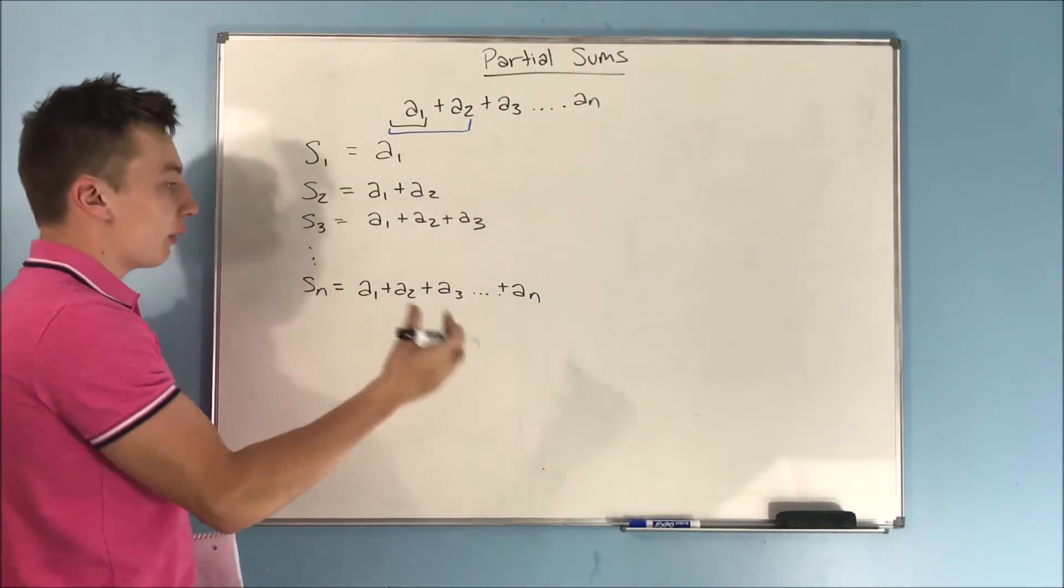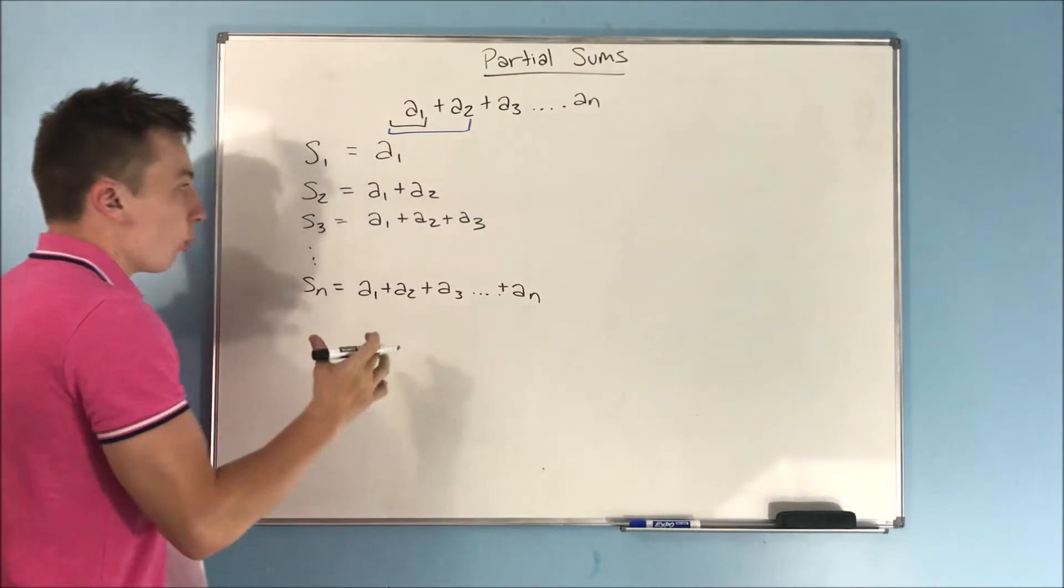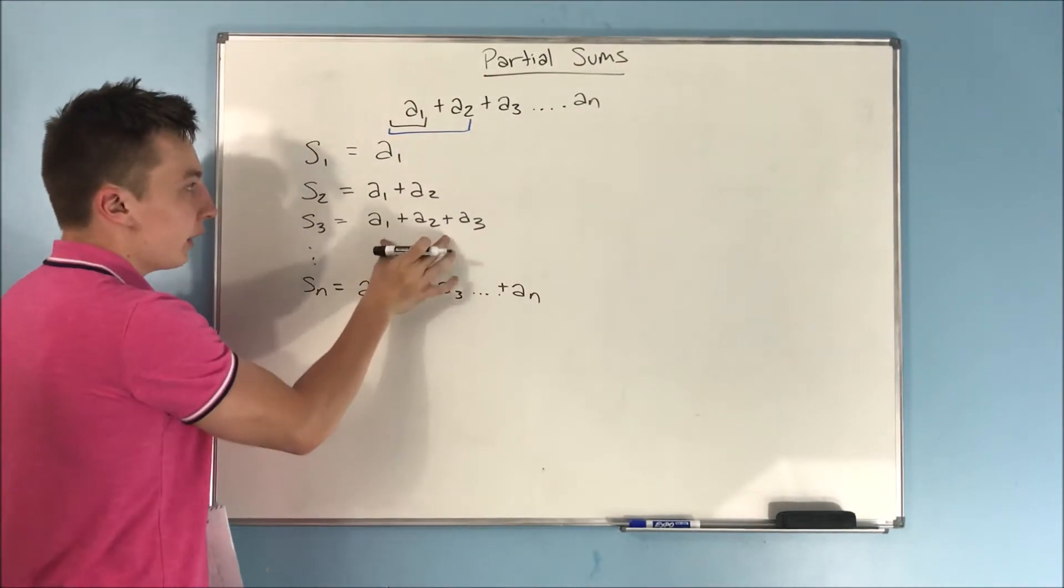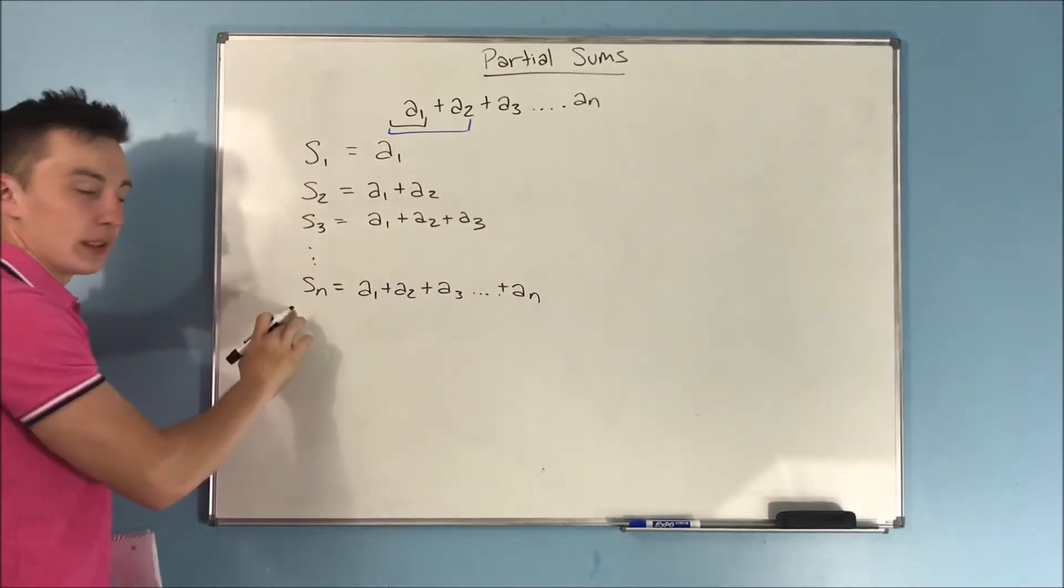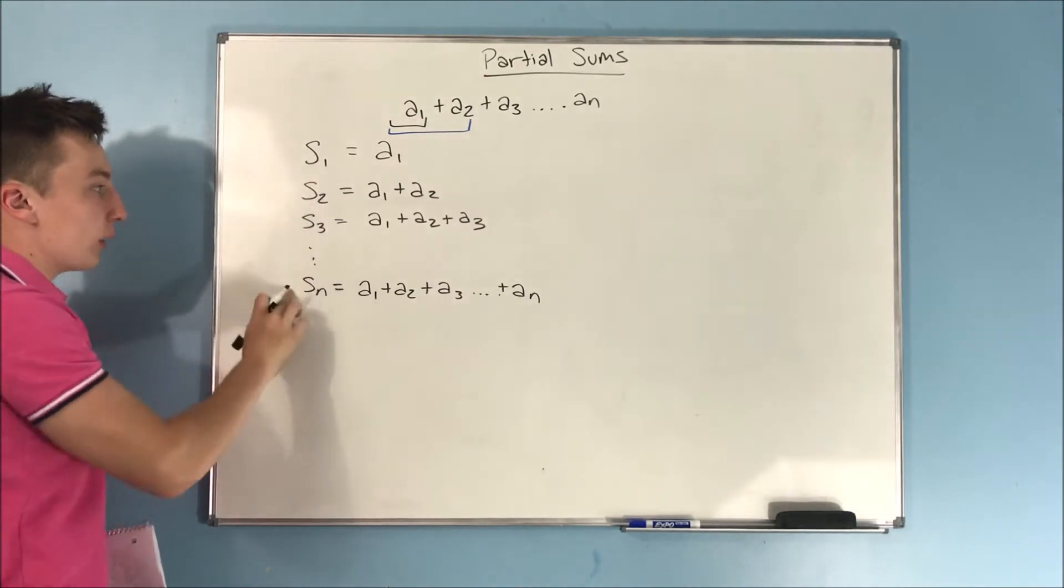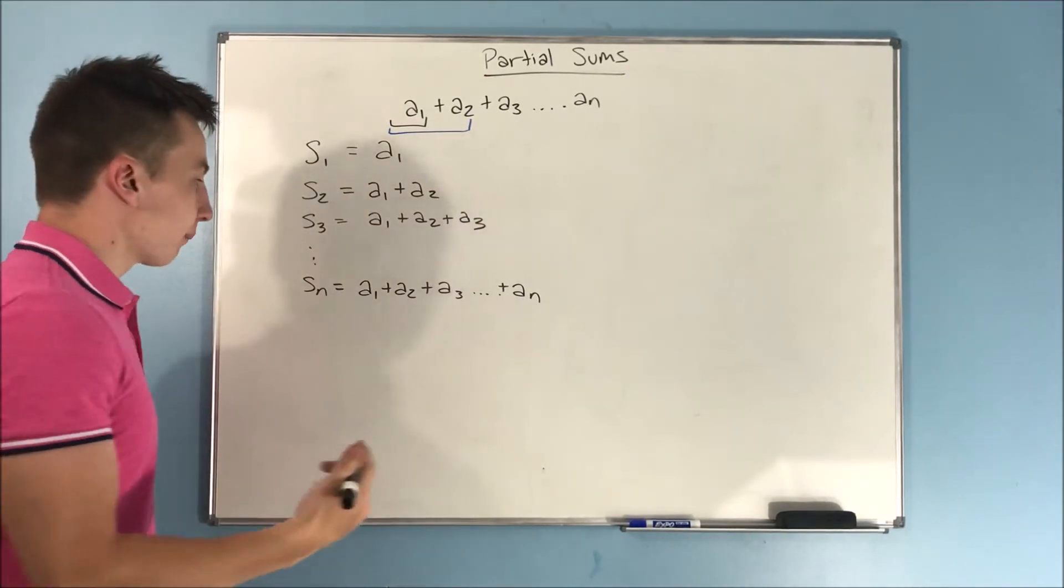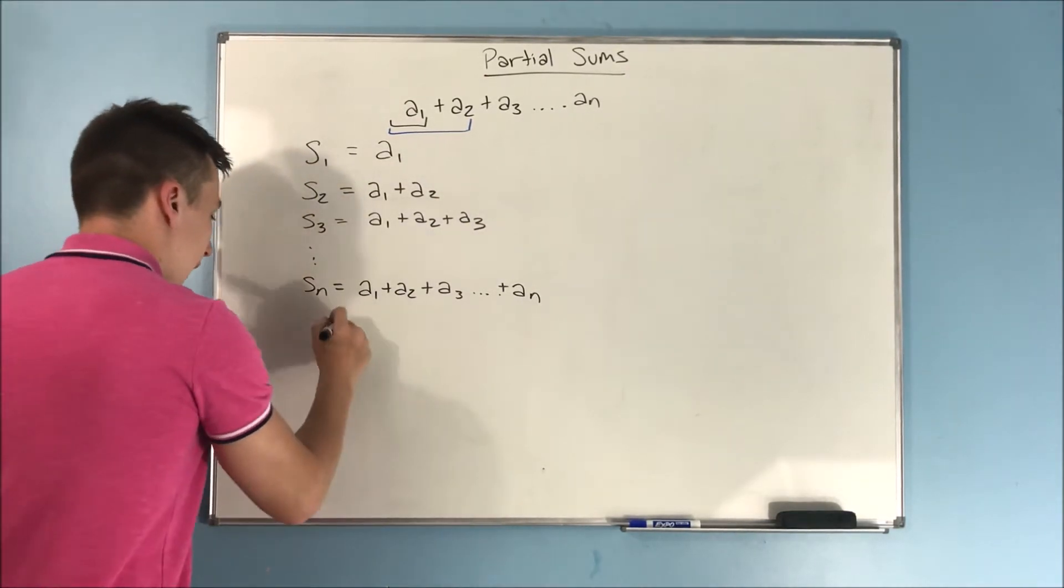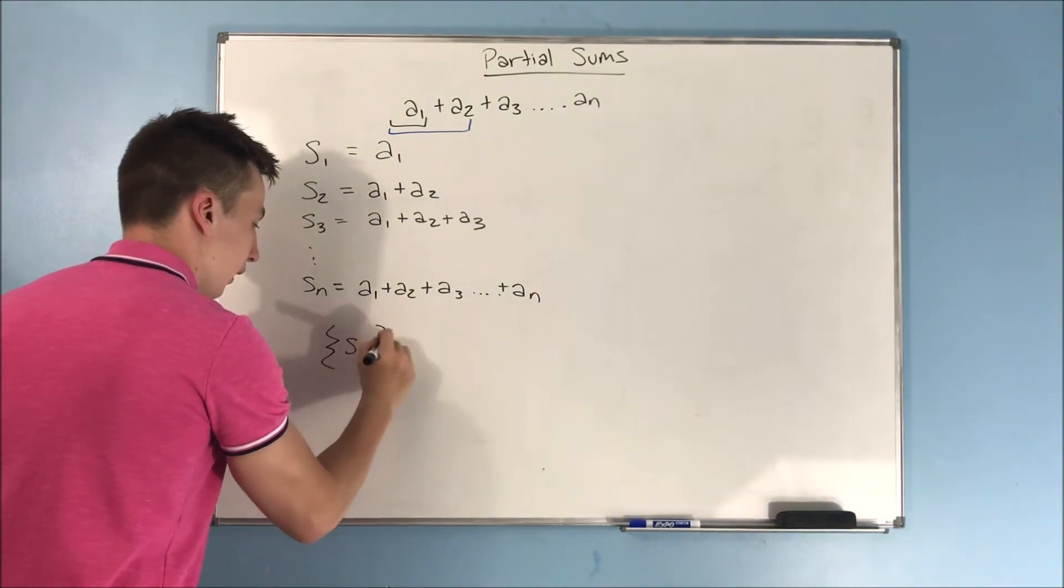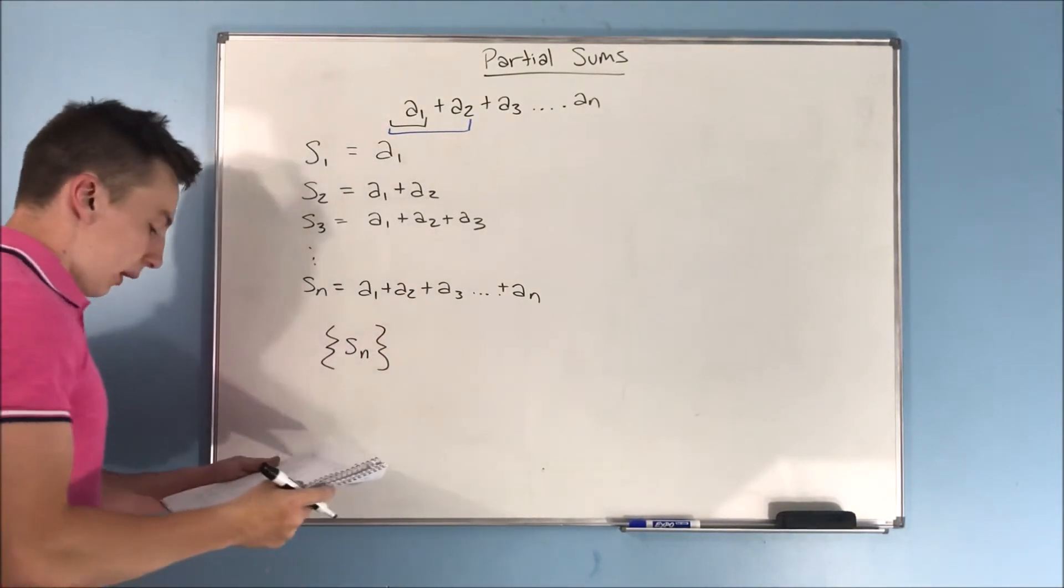All right, so what we can do now, and you kind of just realize what we just did. We converted a series into a sequence. We made a sequence of partial sums, and we write that as s sub n in little curly brackets.